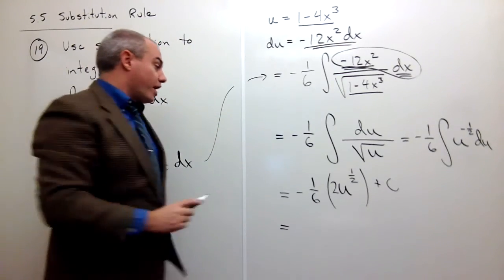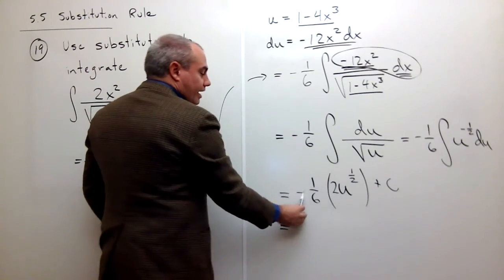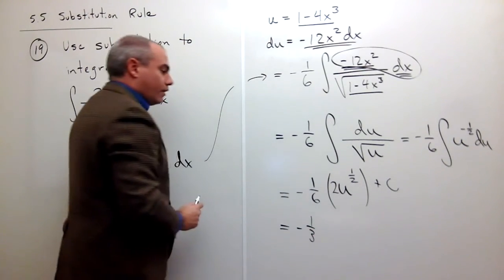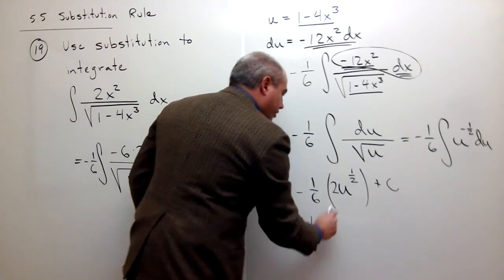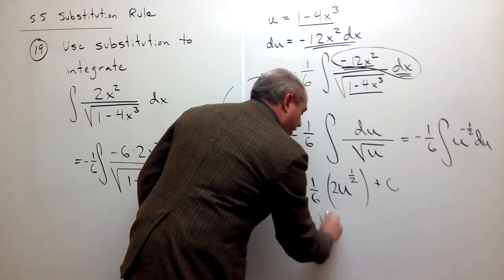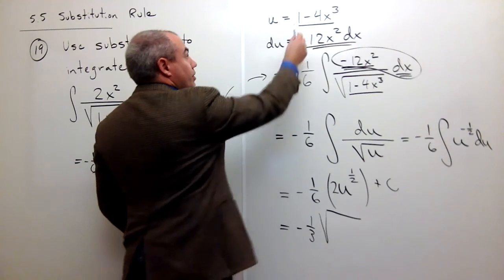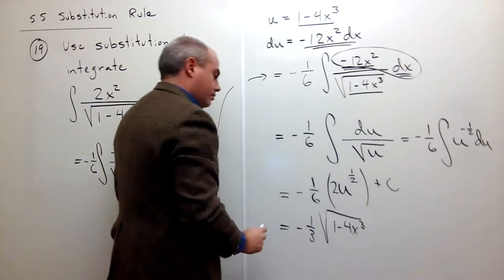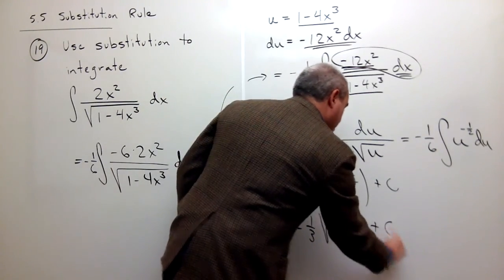Okay, so let's rewrite. By the way, negative 1/6 times 2 is negative 1/3. And then u, by the way, u to the 1/2 is the same as square root of u, but u is 1 minus 4x cubed plus c.